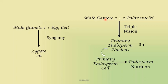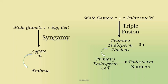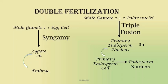Where does the embryo come from? From the zygote. The fertilization event comprises two episodes: the first is syngamy — the fertilization of the male gamete with the egg cell — and the second is triple fusion — the fertilization of the second male gamete with the two polar nuclei. So there is simultaneous occurrence of two different events during fertilization. This type of fertilization is known as double fertilization, and it is a unique feature of sexual reproduction in flowering plants, or angiosperms.